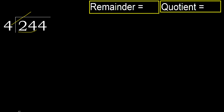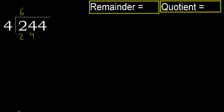4 multiplied by which number is nearest to 24 but not greater? 4 multiplied by 7 is 28, which is greater. 4 multiplied by 6 is 24, which is not greater. Subtract.